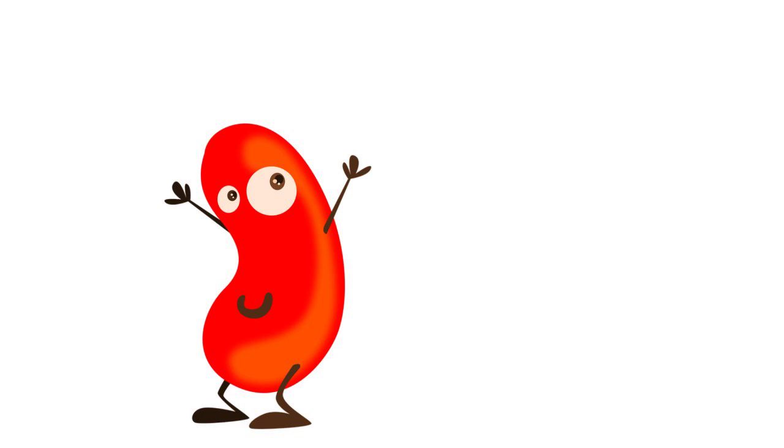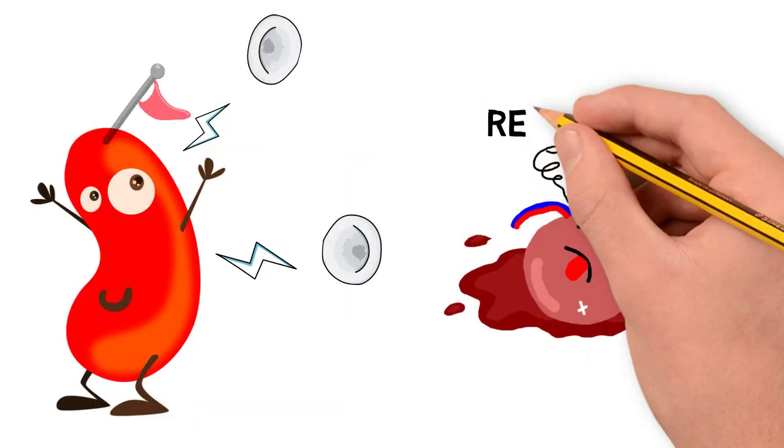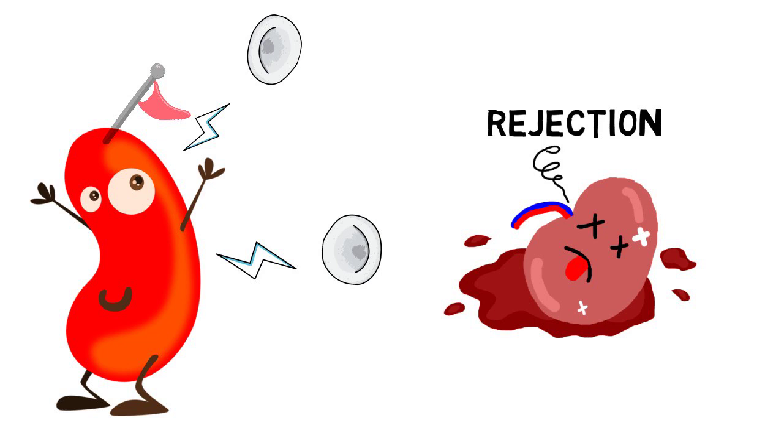When you receive a kidney transplant, the immune system will recognize that the new kidney is foreign and mark it with antibodies. The immune system treats the new kidney like a foreign invader and will work hard to fight it. This damages the transplanted kidney, making it unable to work. This is called rejection.